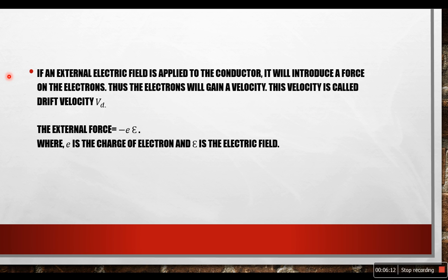When an external electric field is applied to the conductor, it will introduce a force on the electrons. Thus the electrons will gain a velocity as a result of this force. This velocity is called drift velocity. The external force which was introduced by the external electric field can be expressed as minus E into epsilon, where E is the charge of electron and epsilon is the electric field.